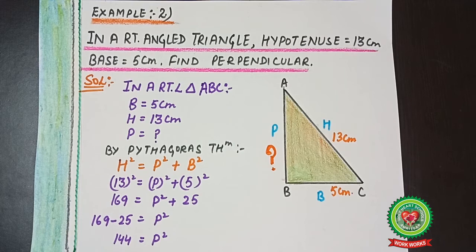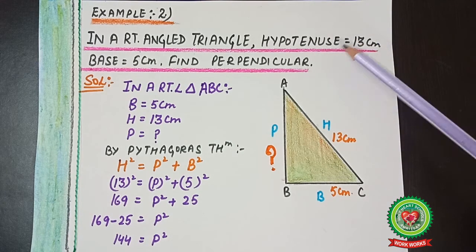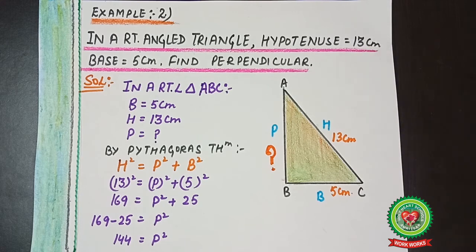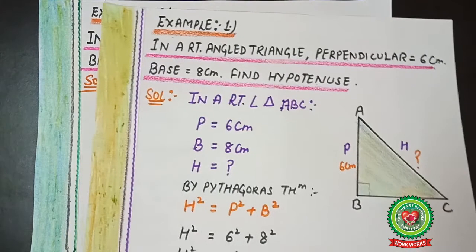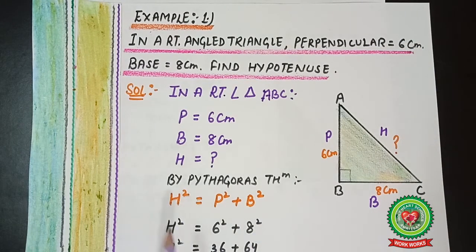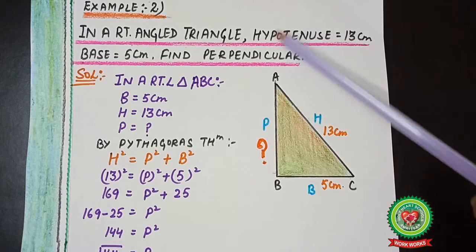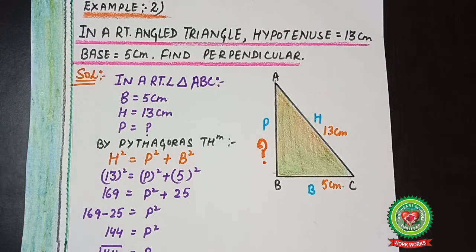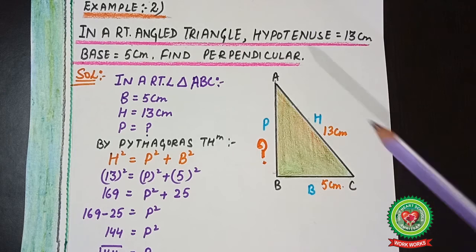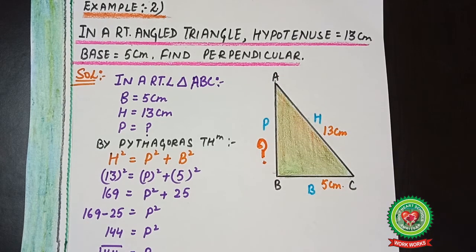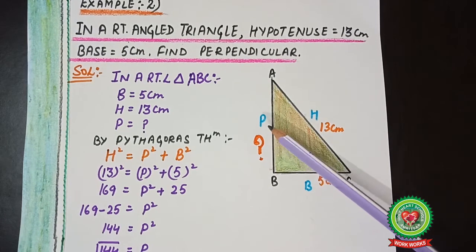Let's take example number two. In a right-angle triangle, hypotenuse equals 13 centimeters and base equals 5 centimeters. Find the perpendicular. Earlier we found the hypotenuse when perpendicular and base were given. Now we are given the hypotenuse and base, and we need to find the perpendicular. We will draw the figure first. ABC is a triangle in which the sides are labeled P, H, and B.